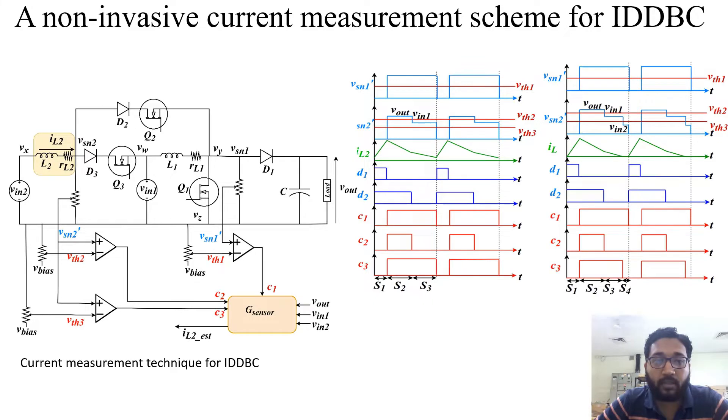This is the IDBC topology as discussed. In this IDBC topology, the two switch node voltages VSN1 and VSN2 are gathered and the information is connected to the comparator. The threshold voltage of the comparator is set manually so that the signals C1, C2, and C3, the comparator output signals, come accordingly.